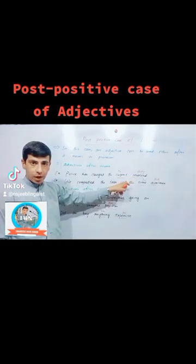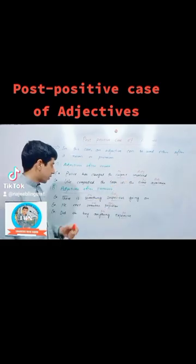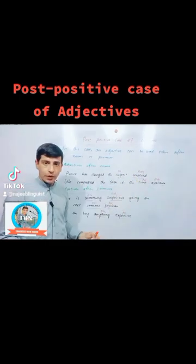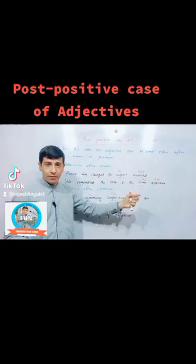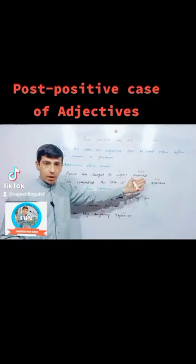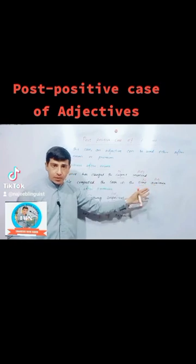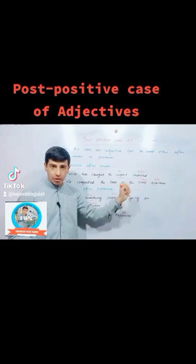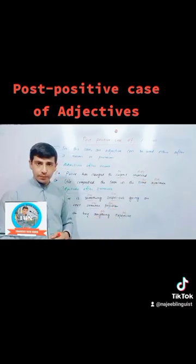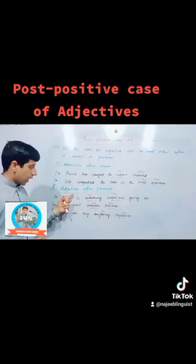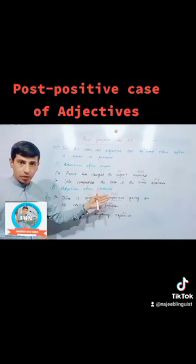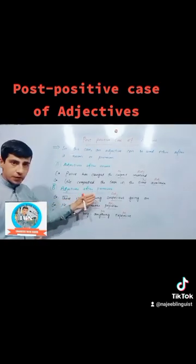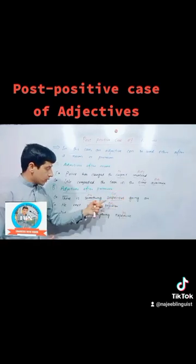Example number two: 'we completed the task and the time available.' Here, 'available' is an adjective and 'time' is a noun, so this adjective is used after the noun. This is called the post-positive case. Section B: adjectives after pronouns — for example, 'there is something suspicious going on.' Here, 'suspicious' is an adjective.